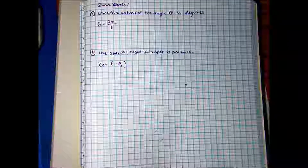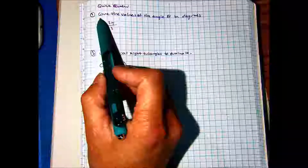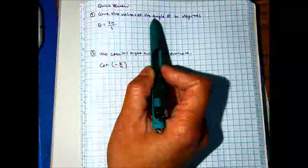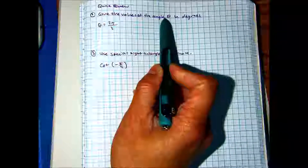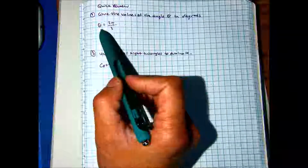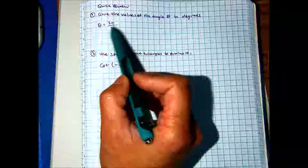Alright, and this problem says: given the values of the angle theta, give the angle they've given us — theta — into degrees. And they've given us the angle in radians.